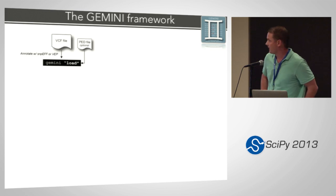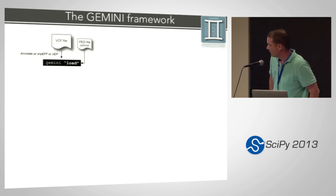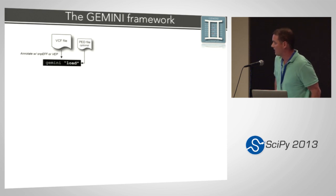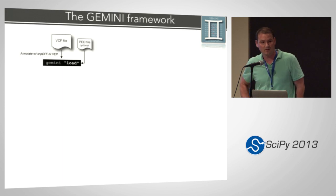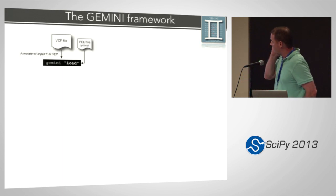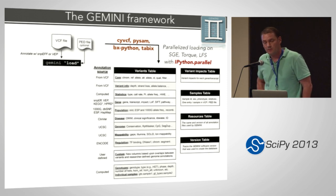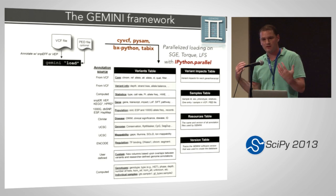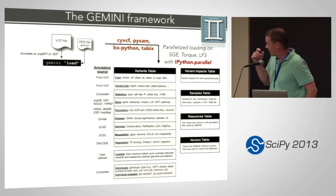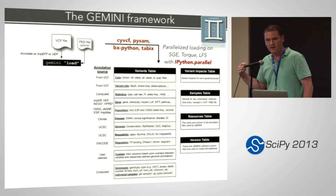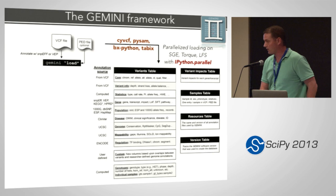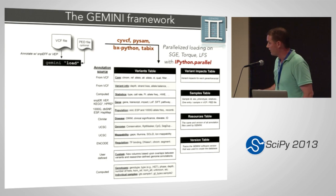Gemini is based in Python. The basic idea is simple commands — we have a command called Gemini load, which takes a big VCF file where rows are genetic variants and columns are genotypes, and maybe a PED file which describes relationships among samples in the study. When you run this load command, it automatically populates a SQLite database with all these genetic variants, in a very easy-to-query interface, by automatically marking up all these genetic variants with annotations, as well as any others you want to add on demand.